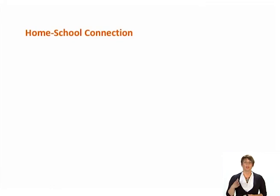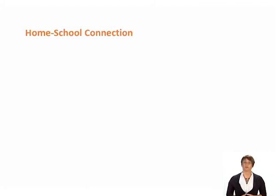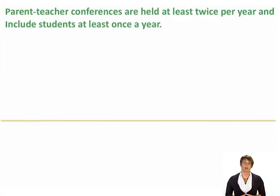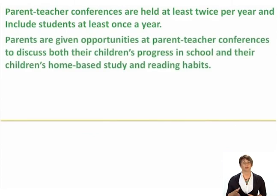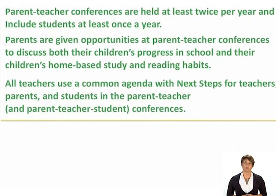Home-School Connection. The first three indicators within the Connection segment address home-school connections, which formally occur through conferencing and other school events that give parents an opportunity to meet with teachers. Parent-teacher conferences are held at least twice per year and include students at least once a year. Parents are given opportunities to discuss their children's progress in school and their children's home-based study and reading habits. All teachers use a common agenda with next steps for teachers, parents, and students in the conferences.